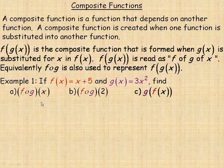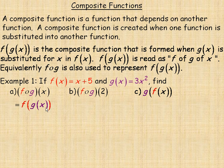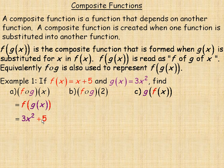In the first example, we're given two functions: f of x is x plus 5 and g of x is 3x squared. We're asked to find f of g of x, so we substitute the g of x function into the f of x function. The g of x function, which is 3x squared, goes in place of x in f of x, giving us f of g of x equals 3x squared plus 5.